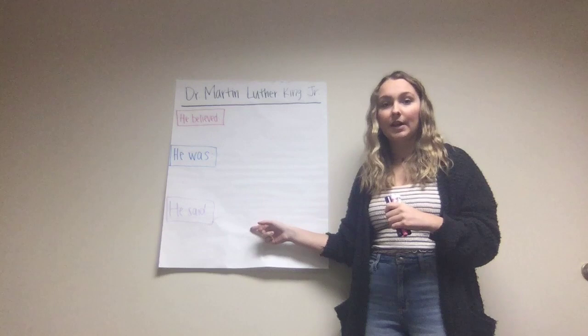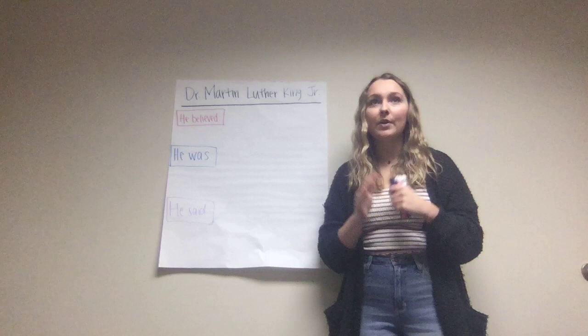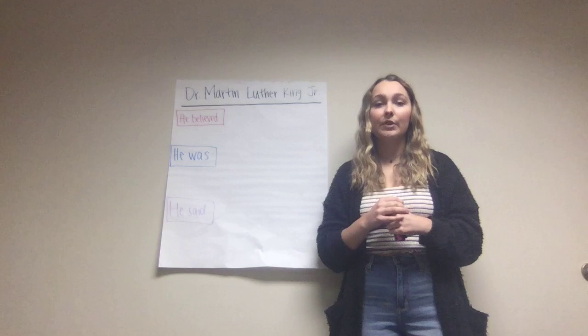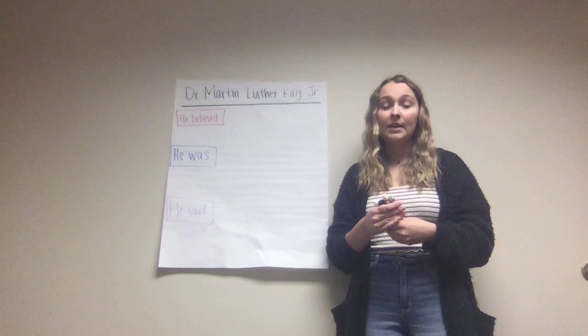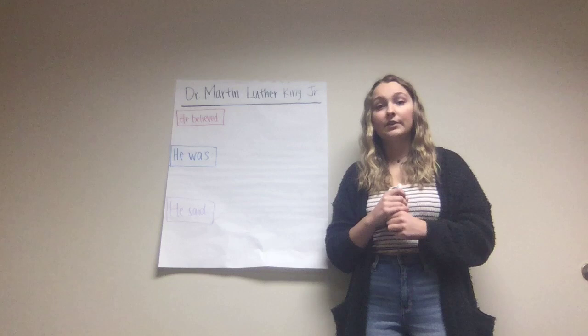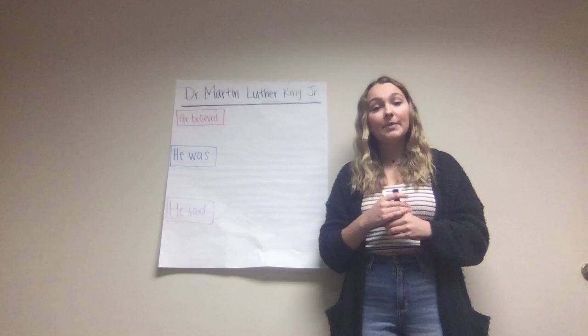Segregation is the separation of people based on something like their skin color. In the video we saw Dr. King experienced segregation when he was a kid, even when his white neighbors wouldn't let him play with them. We can see this later in the video too when they were voting for voting rights, and schools were also segregated. This is not a good thing, and Dr. King worked to get rid of segregation. Keep that in mind because we're going to review it later in the chart.